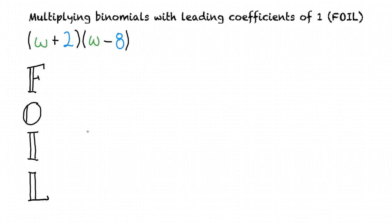The word FOIL stands for first, outer, inner, and last. If we remember these words in this order, it will tell us how we can quickly multiply these two binomials.